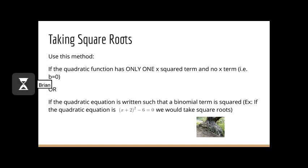There are two main reasons as to why we would use taking square roots as our method for solving quadratic equations. The first reason is if we are given a quadratic function that has only one x squared term and no x term, i.e. b is equal to zero. Or, if the quadratic equation is written in such a way that a binomial term is squared. For example, the equation x plus 2 squared minus 6 equals zero — notice that the whole binomial term, x plus 2, is squared. So if we were given an equation that looked like this, we would want to take square roots.